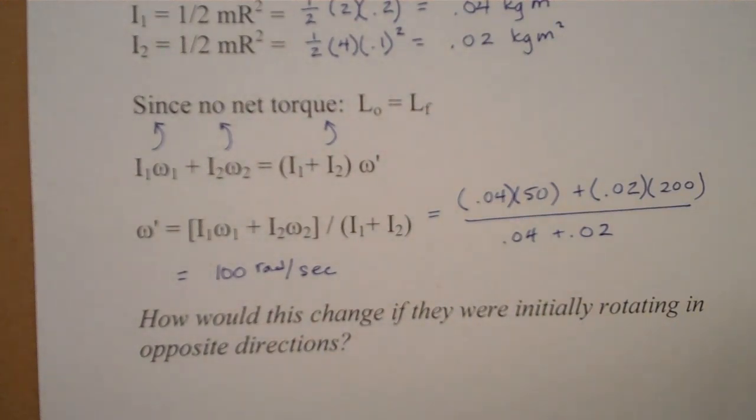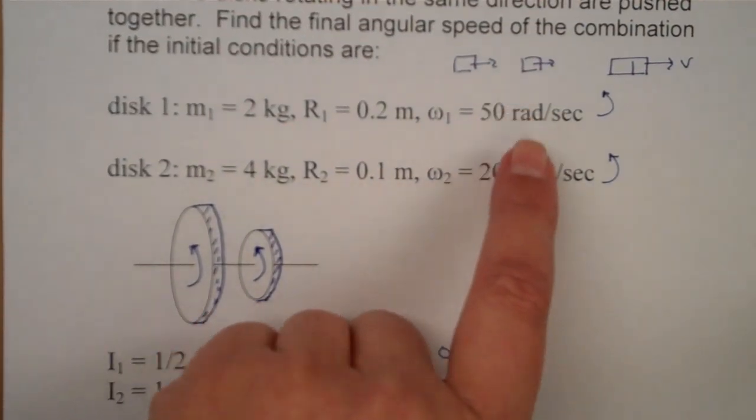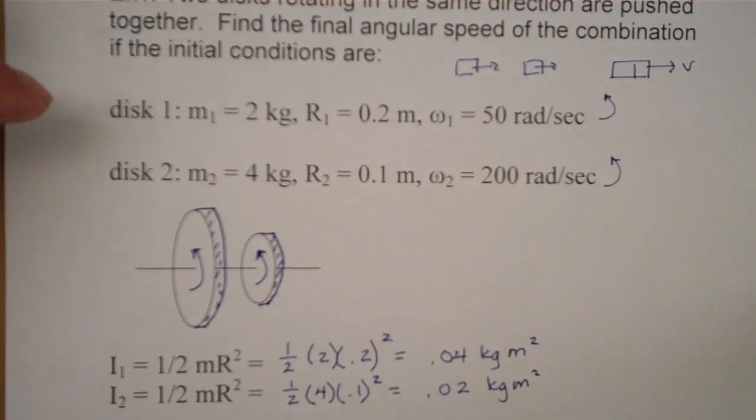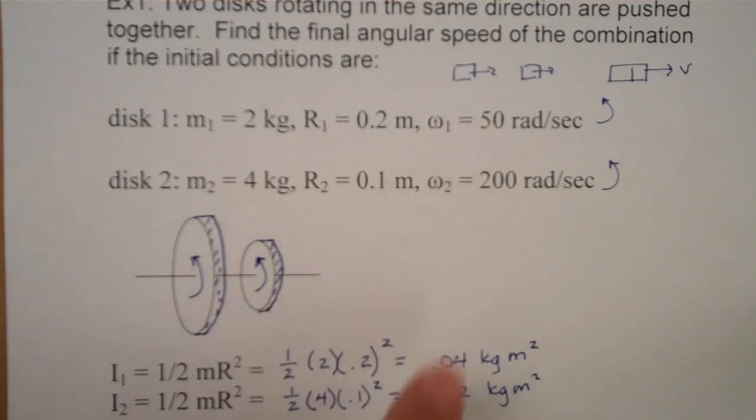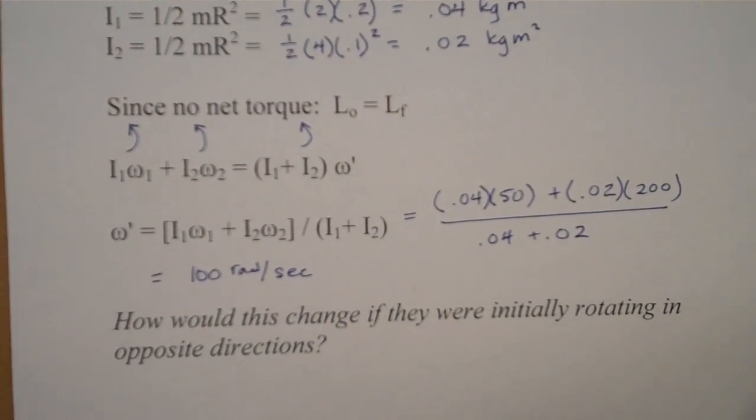Now, this seems to make sense, that our final speed is going to be somewhere between the two, so the slower one is going to speed up, the faster one is going to slow down, and they'll be moving together at 100 radians per second.